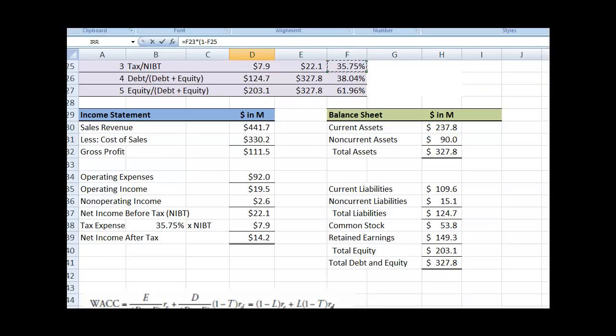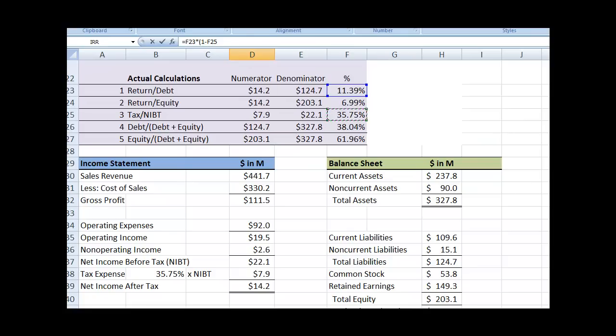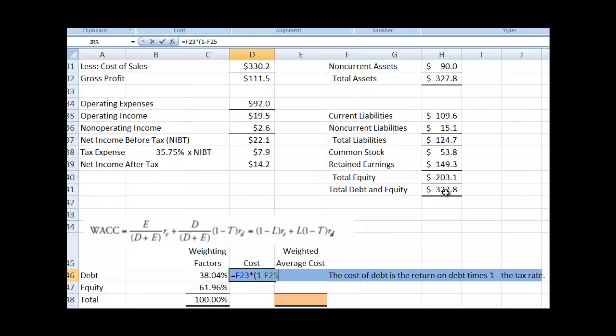So we'll just grab that from up here. The tax divided by the NIBT is the tax rate. And then we close our parentheses. And we have our cost of debt.